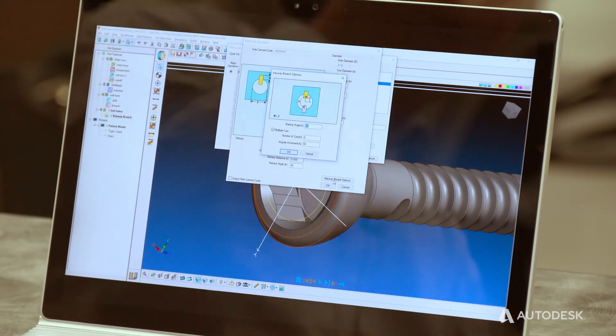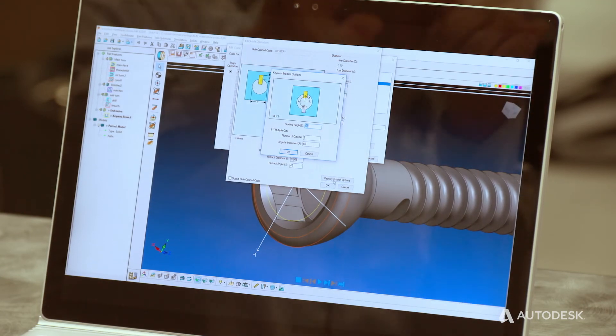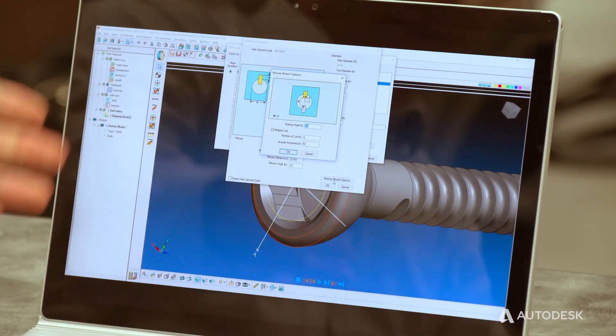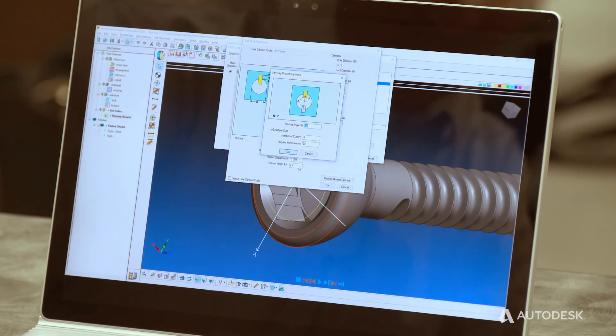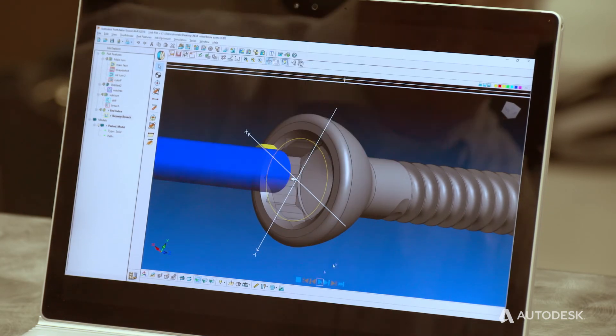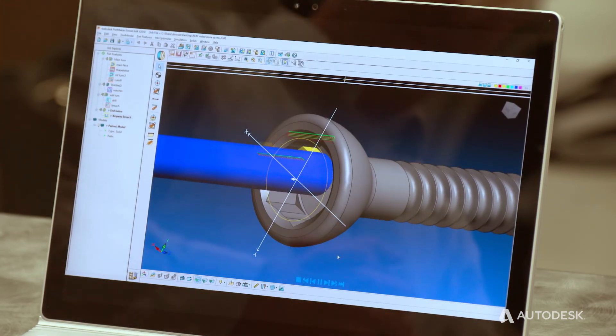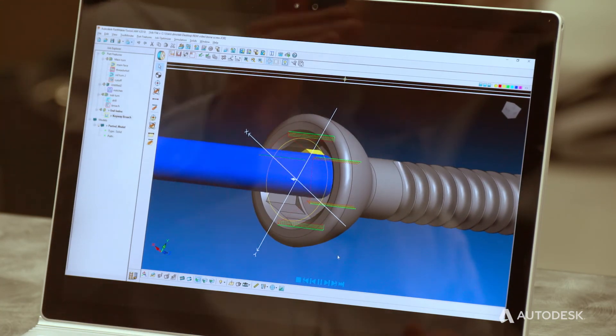We also can index around. So we're going to be nibbling out one corner. Well, we have six corners we got to do. So I can set my angle of increment and my number of indexes and my starting angle here. Once we've got our process all dialed in, we can go ahead and visualize this and actually see the part being nibble broached, nibbling out those corners.